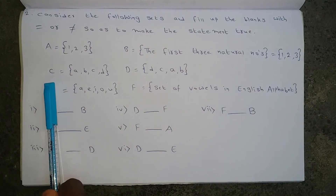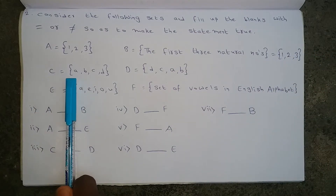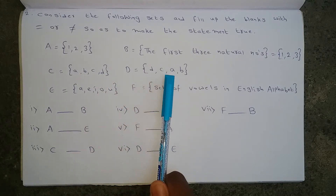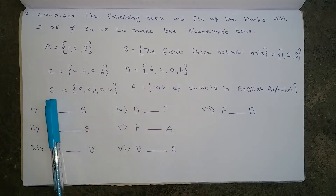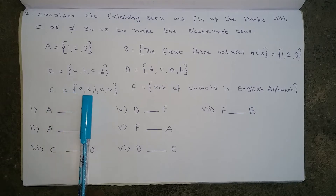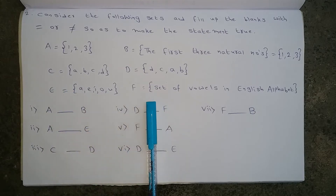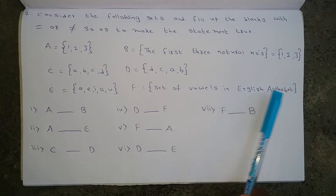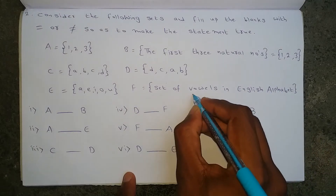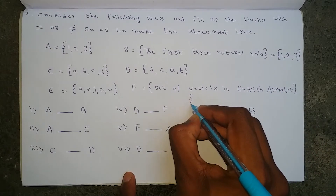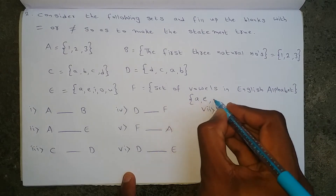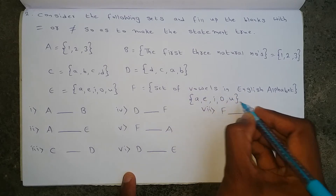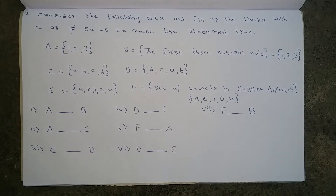Next, set C is {A, B, C, D} and set D is {D, C, A, B}. Set E is {A, E, I, O, U}. Set F is the set of vowels in the English alphabet. Writing all the vowels in the English alphabet: those are A, E, I, O, U.